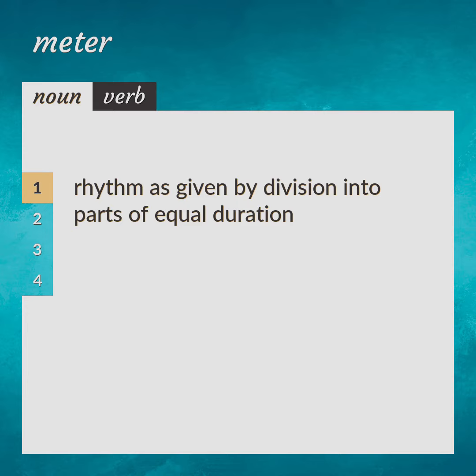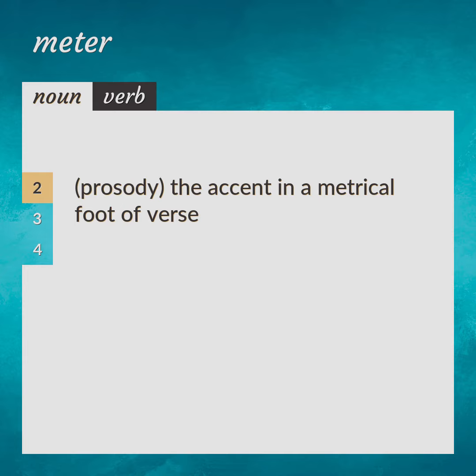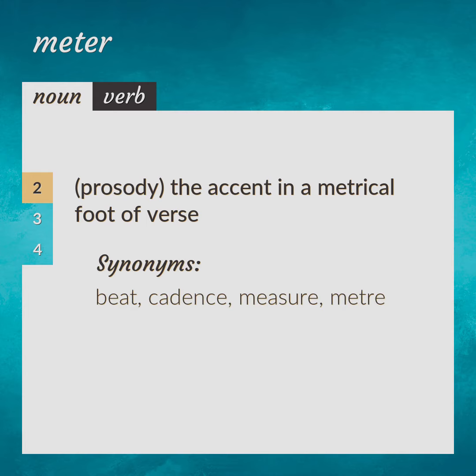Rhythm is given by division into parts of equal duration. Meter, time. Prosody: the accent in a metrical foot of verse. Beat, cadence, measure, meter.